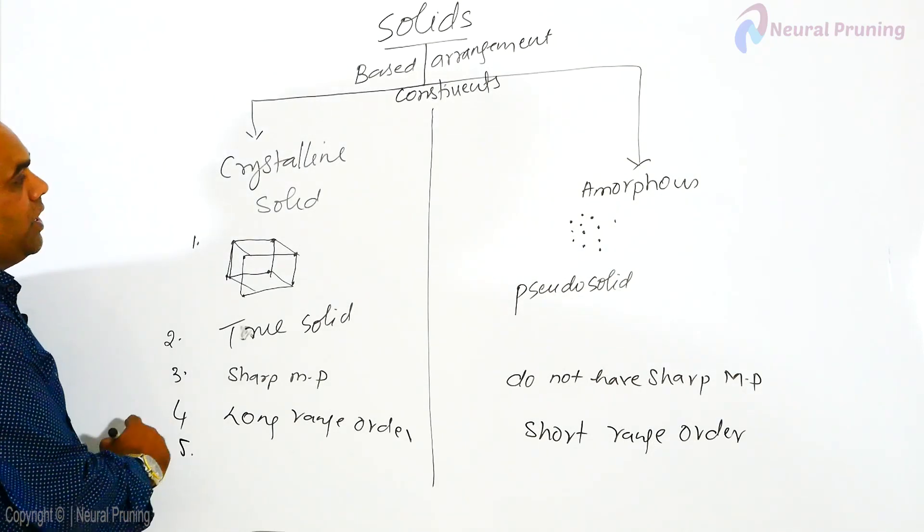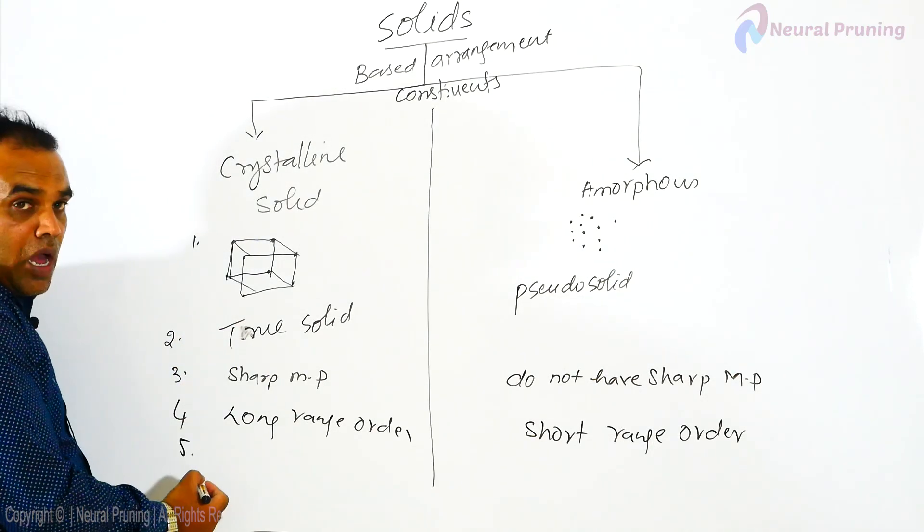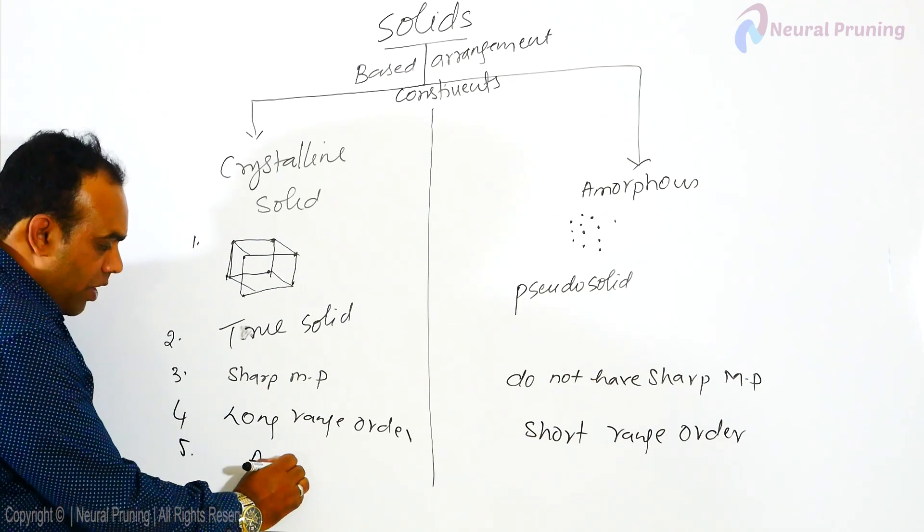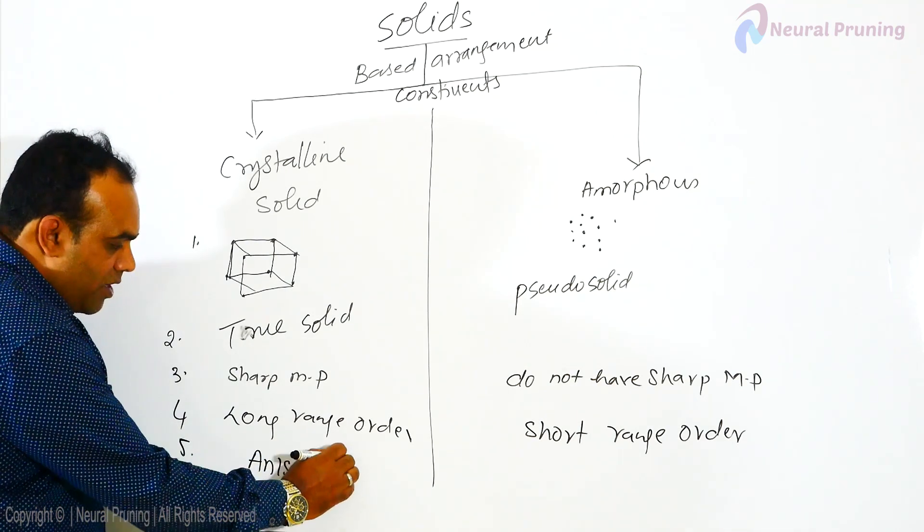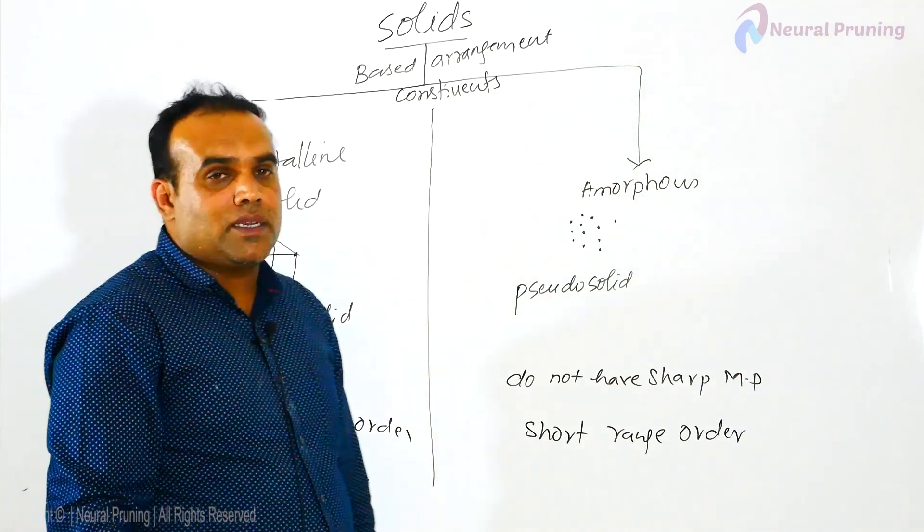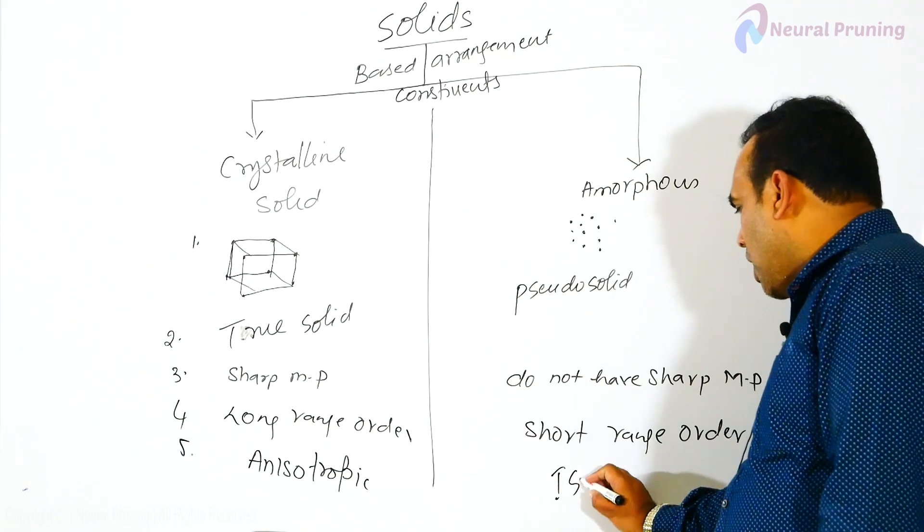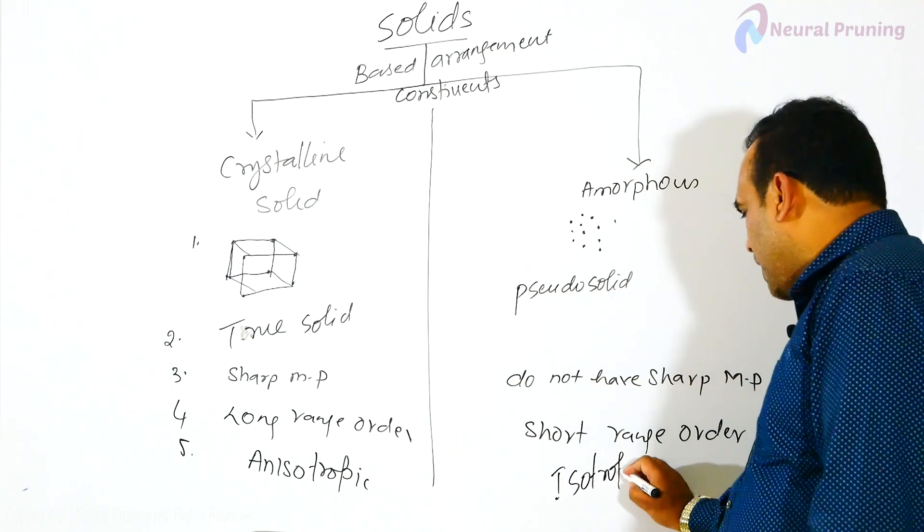The fifth difference is, crystalline solids are generally anisotropic, whereas amorphous are isotropic in nature.